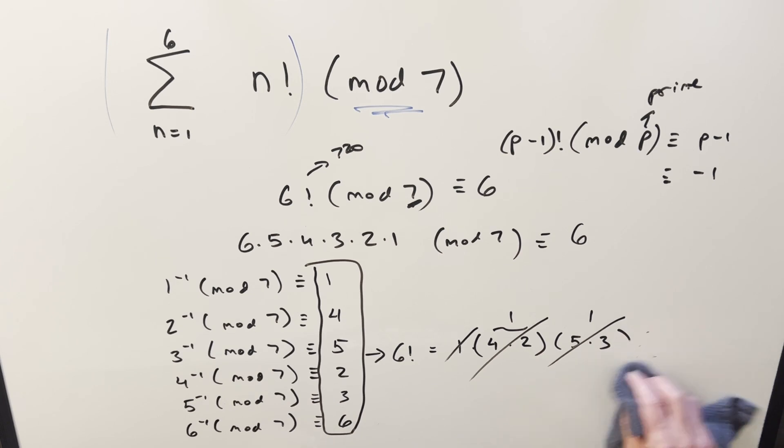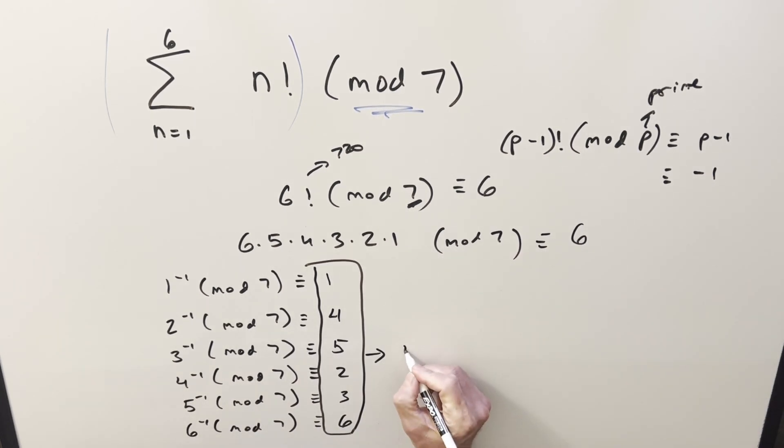But along with this we can get another value just as easily instead of looking at 6 factorial we can look at 5 factorial and just do basically the same thing we just did, write out 5 factorial like this out of order. 1 times 2 times 4 and then 5 times 3 just leaving off the 6 and then what happens again because they're inverses this is 1 this is 1 we end up with 1 times 1 times 1 and so the whole thing is just 1.